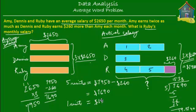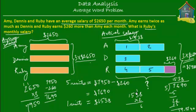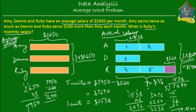So 1 unit is equal to $1,538, which means each blue block is equal to $1,538. Ruby's salary is 2 blue blocks plus the purple block of $260. So that's $1,538 times 2, which equals $3,076, plus $260. So $3,076 plus $260 equals $3,336. Ruby's monthly salary is $3,336.